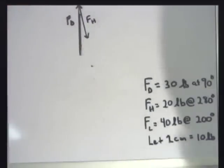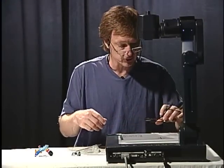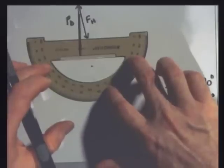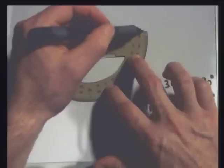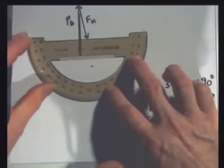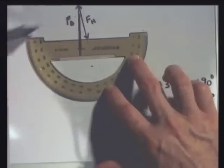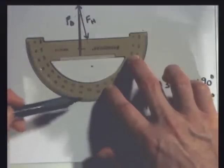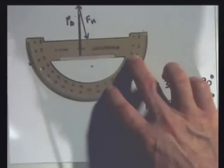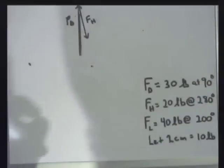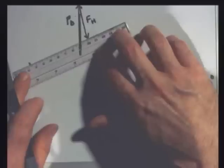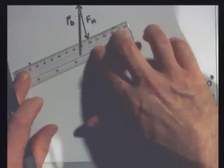Now finally, I want to add Lando Calrissian. He's putting out 40 pounds at 200 degrees. So once again, I start where I finish. The protractor is upside down because I'm above 180 degrees. There is 0, there's 90. Here's 180. Now Lando's at 200. So 180, 190, 200. So this is where I ended with Han Solo. I head straight for Lando Calrissian. And it's 40 pounds, so we're going to go 8 centimeters.